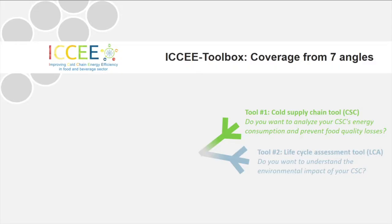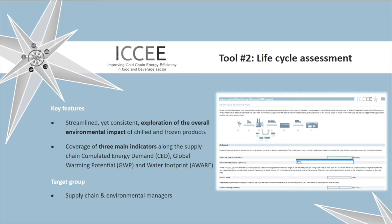The second tool is the life cycle assessment tool. It goes beyond the mere energy perspective and broadens the view on environmental performance. Its aim is to help identify the environmental impact of cold supply chains, modeling it for three of the most common impact categories: global warming potentials, cumulative energy demand, and water consumption. Global warming potentials follow the 2013 IPCC method, cumulative energy demand is quantified upon data from EcoInvent, and water usage is analyzed using the AWARE method.